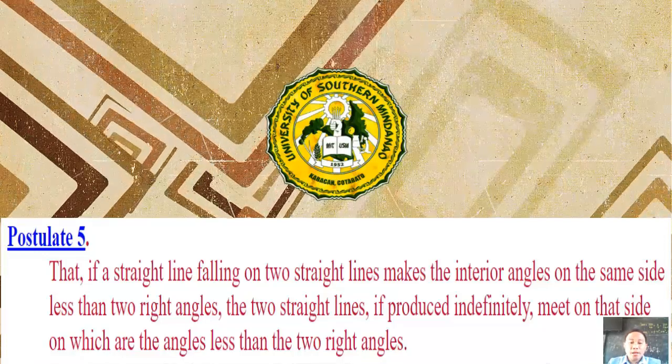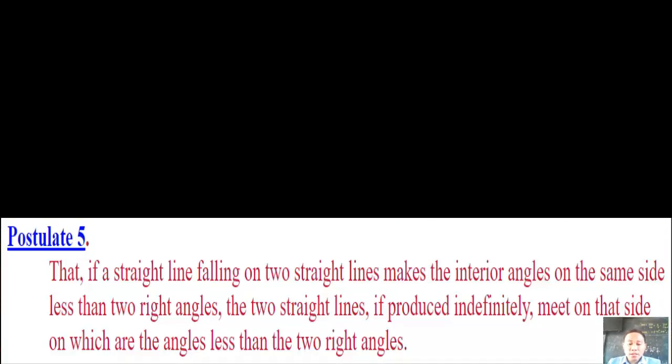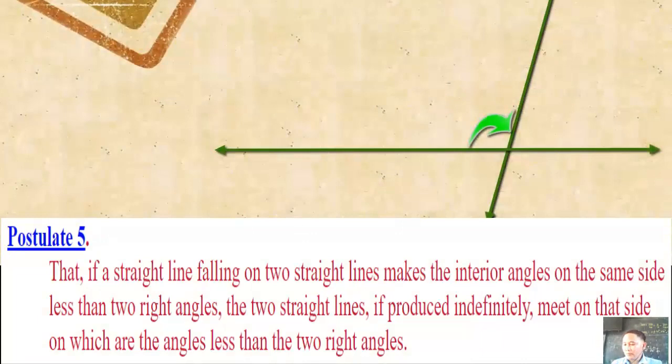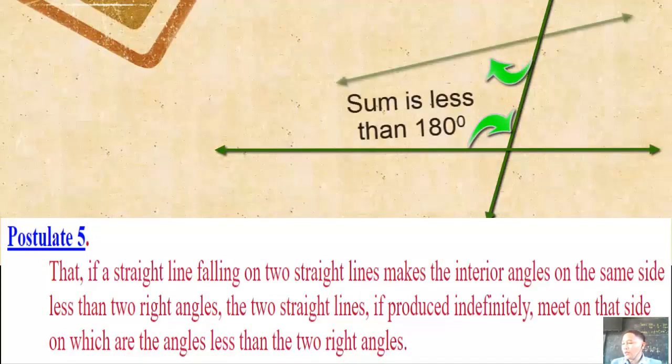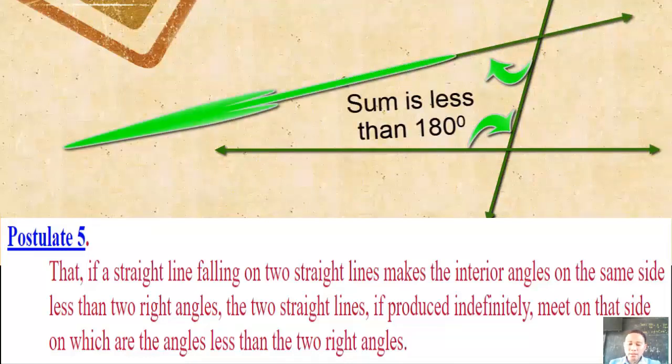Postulate 5 states that if a straight line falling on two straight lines makes the interior angles on the same side less than two right angles, then the two lines, if produced indefinitely, meet on that side on which are the angles less than the two right angles.